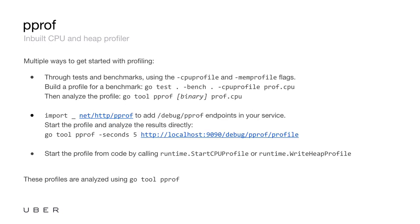For profiles, you need to first create a profile — you need to instrument your binary, record what's happening, and generate a binary profile out of it. There are a few ways you can do that. The first is through tests and benchmarks. When you're running go test, you can pass -cpuprofile or -memprofile, and that generates a profile.